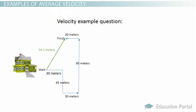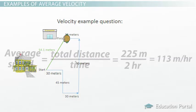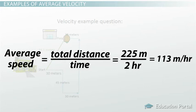You decide to walk from your house to the store, taking the blue route to get there. You cover 225 meters total. The walk takes you 2 hours. First, let's find your average speed. Average speed equals total distance divided by time, which equals 225 meters divided by 2 hours, which equals 113 meters per hour.